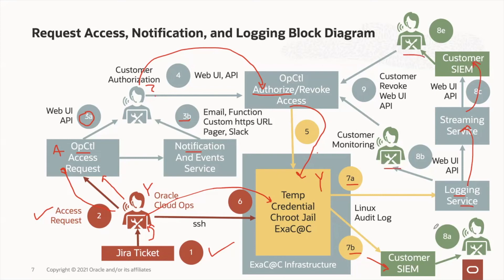Should any of the security staff or staff authorized to perform security actions deem it necessary to terminate the operator access, that staff simply executes a revoke command from an Operator Access Control credential. The software will then destroy all of the processes that have been started by all of the credentials associated with that access request, including any subprocesses spawned by those processes. It will terminate the SSH TCP connections and finally revoke the credentials from the chroot jail, stopping the operator work from proceeding any further and preventing any future login without an additional access request.